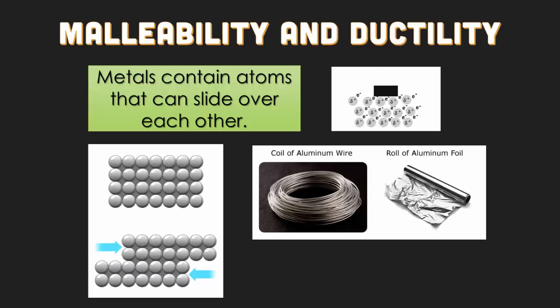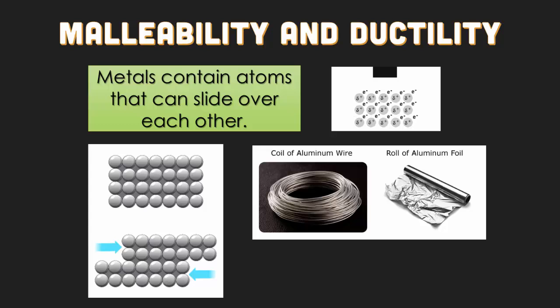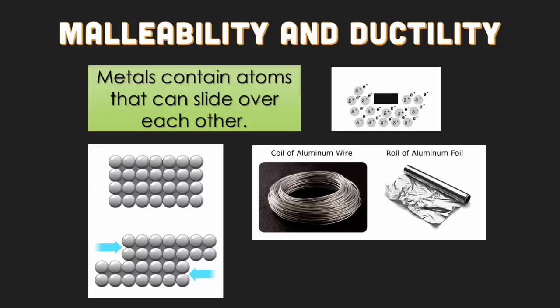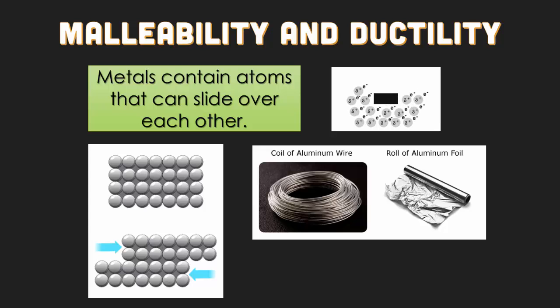In regards to malleability and ductility, the reason why metals are able to do this is because their atoms can actually slide over each other since there is a sea of electrons. As that block comes down in the animating gif, the actual atoms just move out of its way — they're still stuck to each other through electromagnetic forces, but they just move because they have that free ability to.